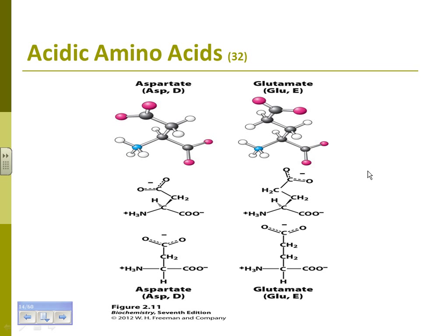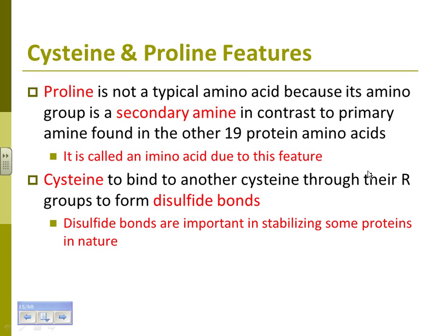Aspartate and glutamate are very similar to asparagine and glutamine, except they have an extra carboxylic acid group. Those are your two acidic amino acids.